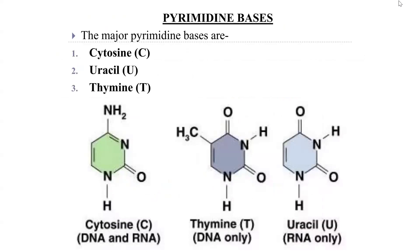The pyrimidine bases are cytosine, uracil, and thymine. Cytosine is found in both DNA and RNA. Thymine is found only in DNA, while uracil is found only in RNA.